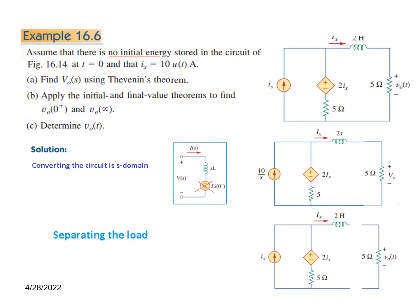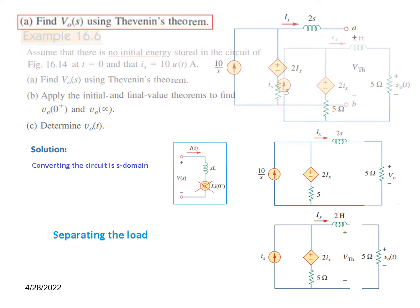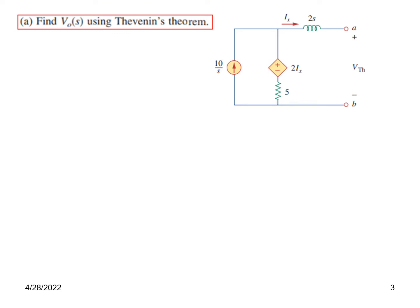Since the question asks us to find V0 using Thevenin's theorem, the first step is to separate the load. The voltage across the separated terminals is the Thevenin voltage, V_Thevenin. So the first part requires finding V0(S) using Thevenin's equivalent circuit, and for that we first need to find V_Thevenin.